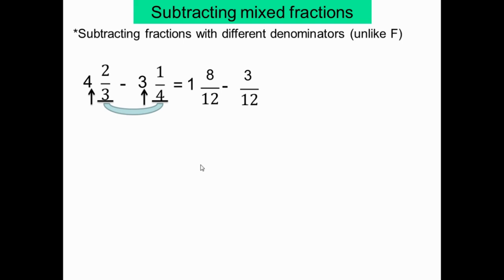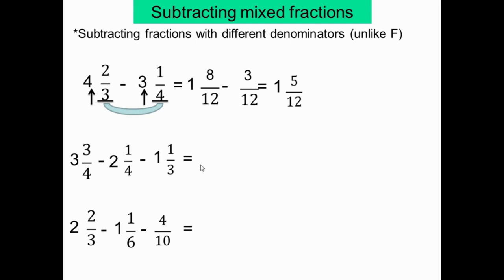Maintenant on a le même dénominateur. La partie entière est 1. On soustrait les numérateurs: 8 moins 3 égal 5. La réponse est 1 et 5/12. Prenons quelques secondes pour les exercices. Posez la vidéo, travaillez, puis regardez les réponses.